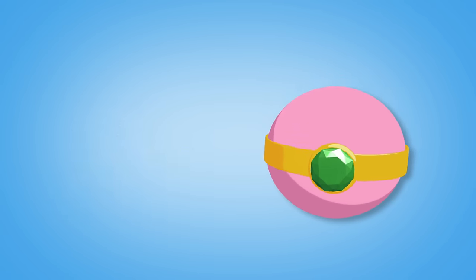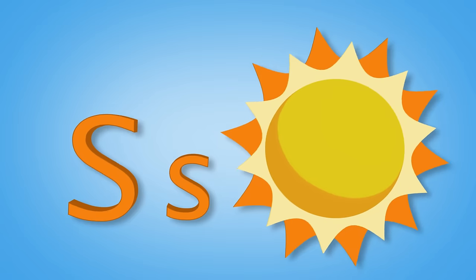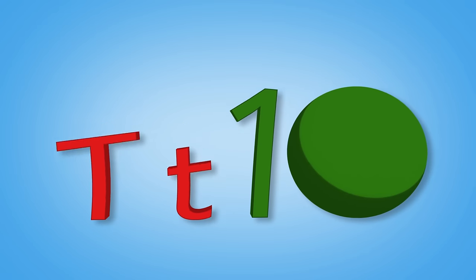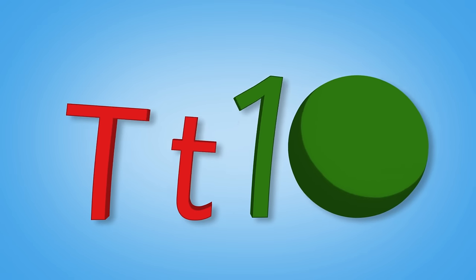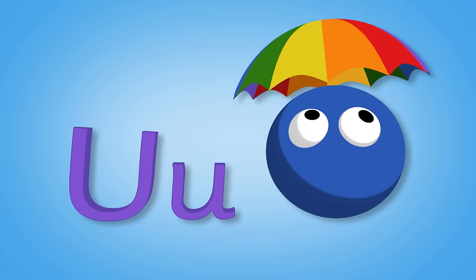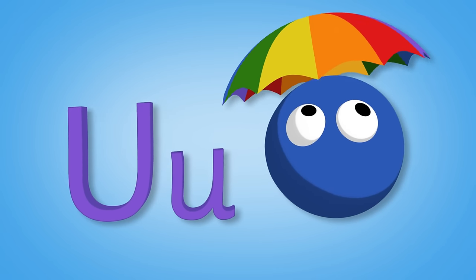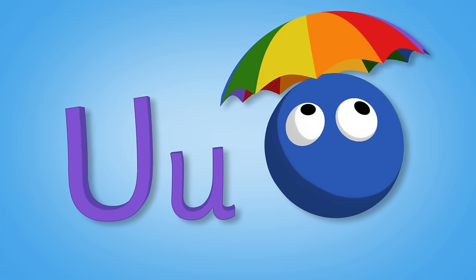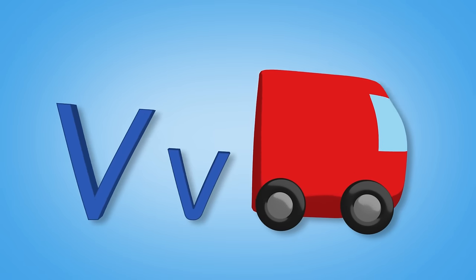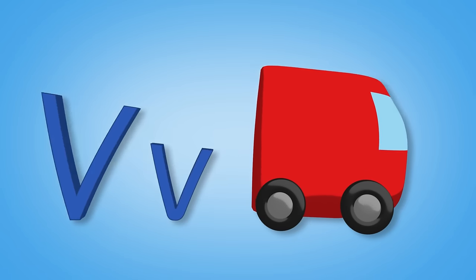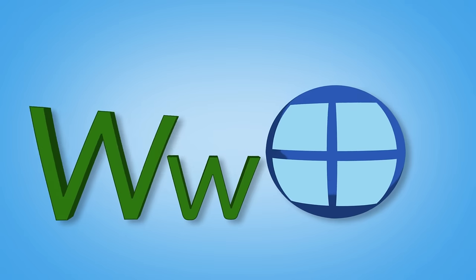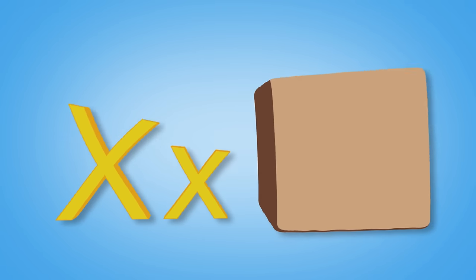R is for ring. S-s-s-s-s is for sun. T-t-t-t is for ten. U-u-u is for umbrella. V-v-v-v-v is for van.